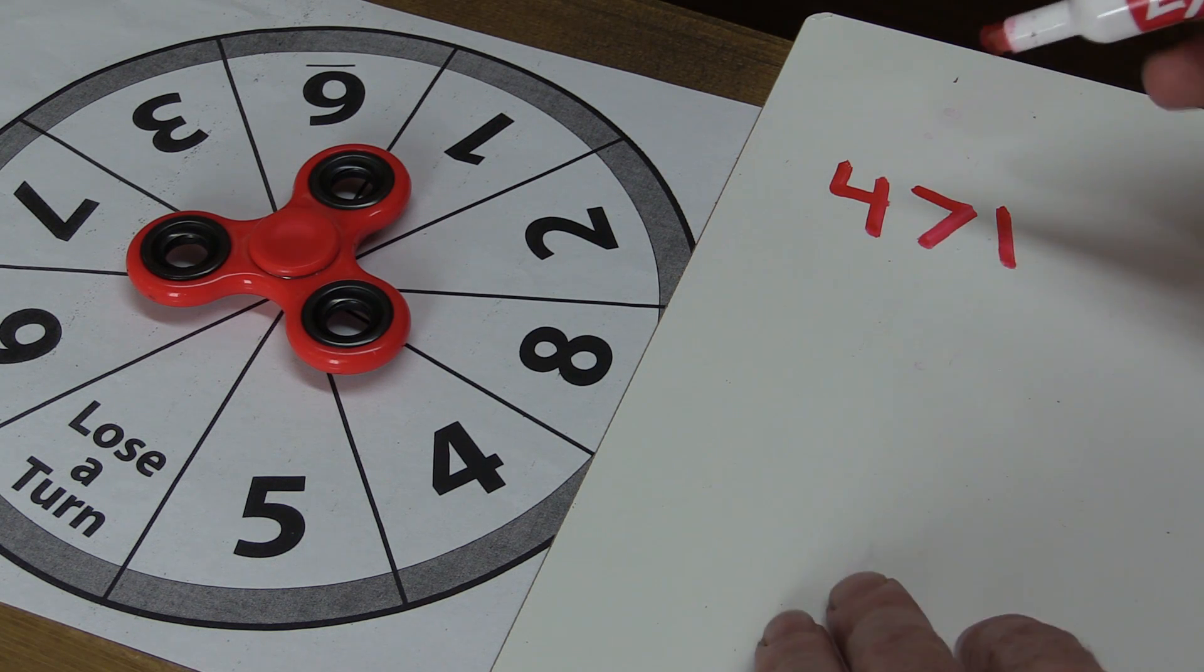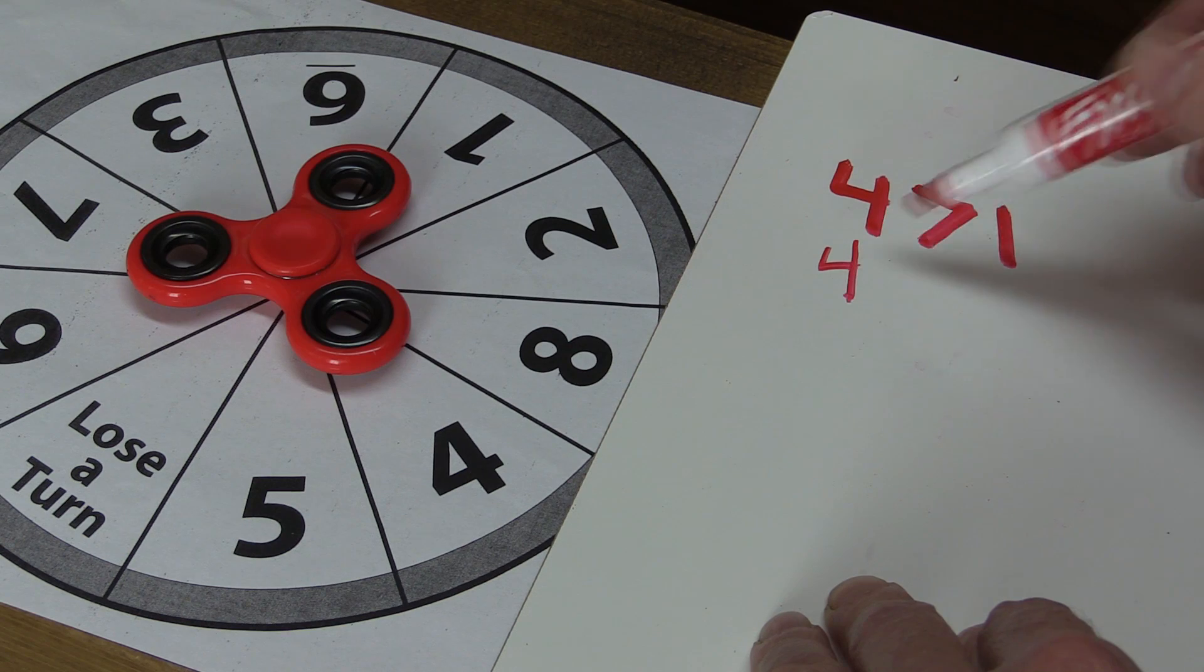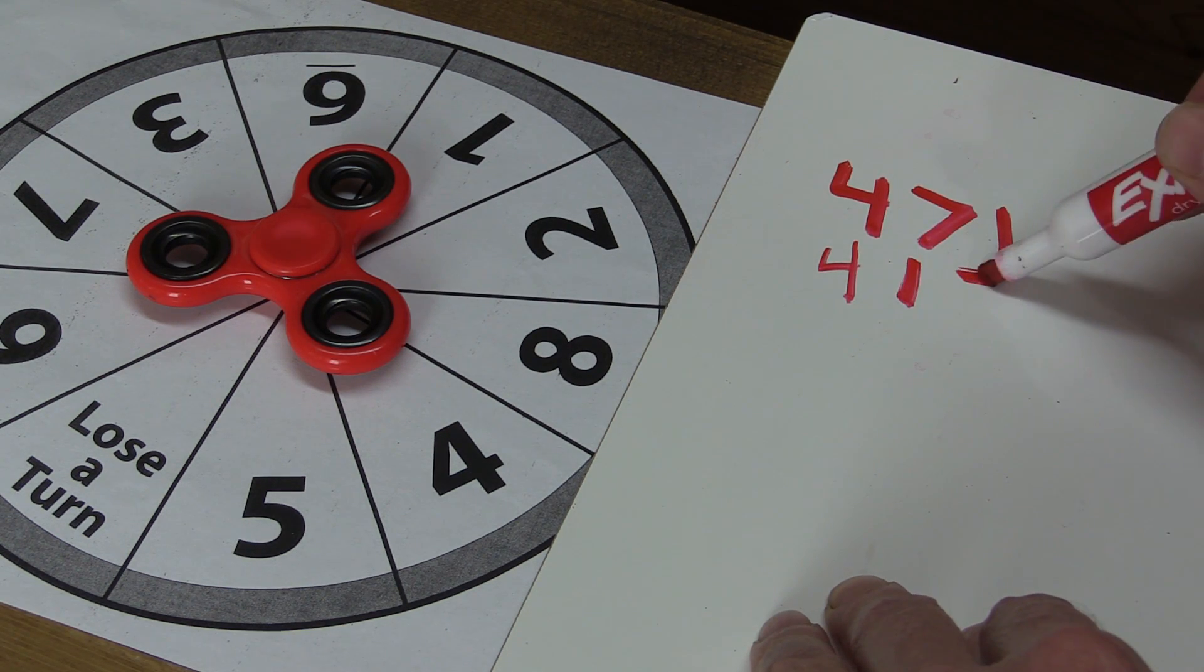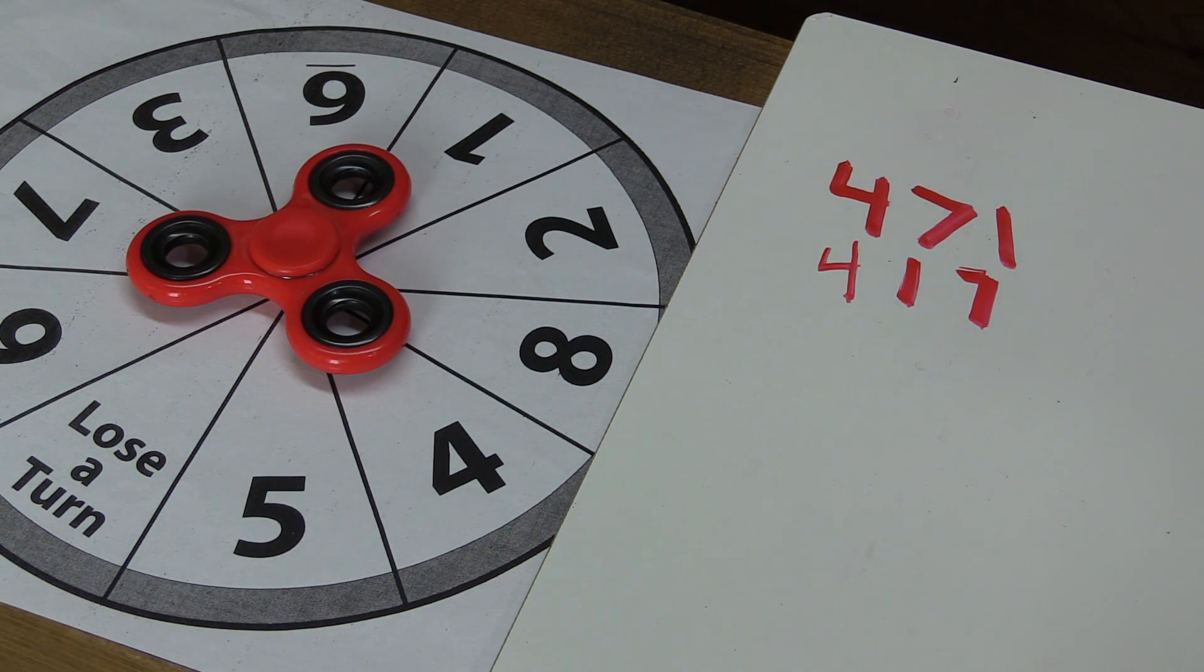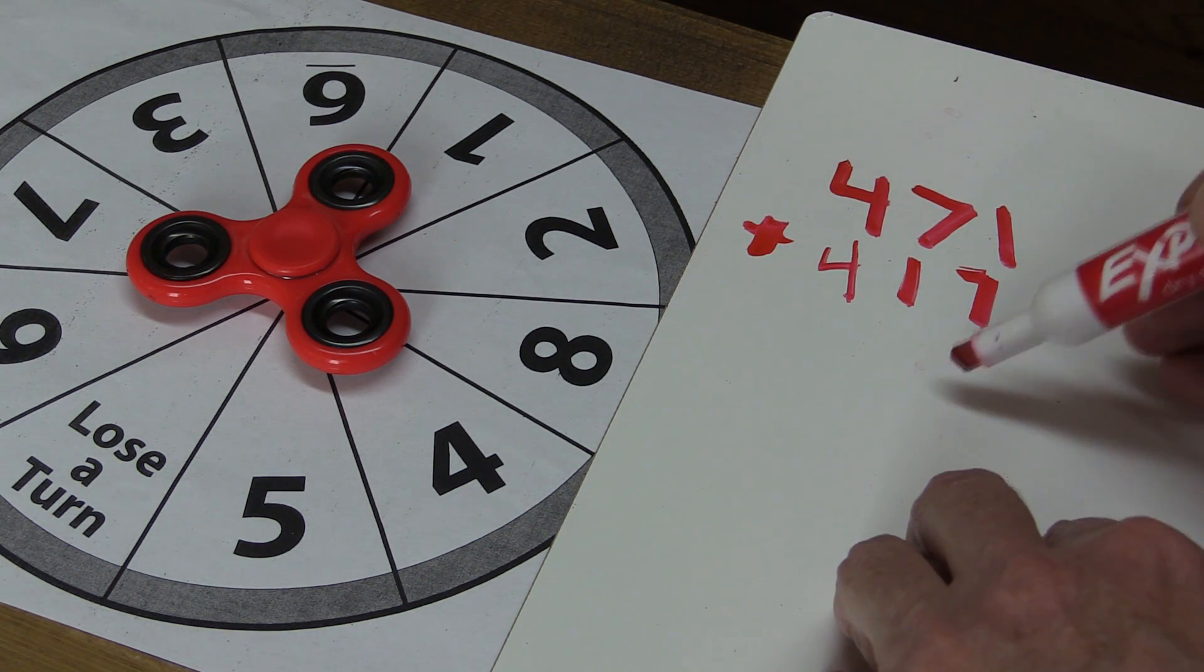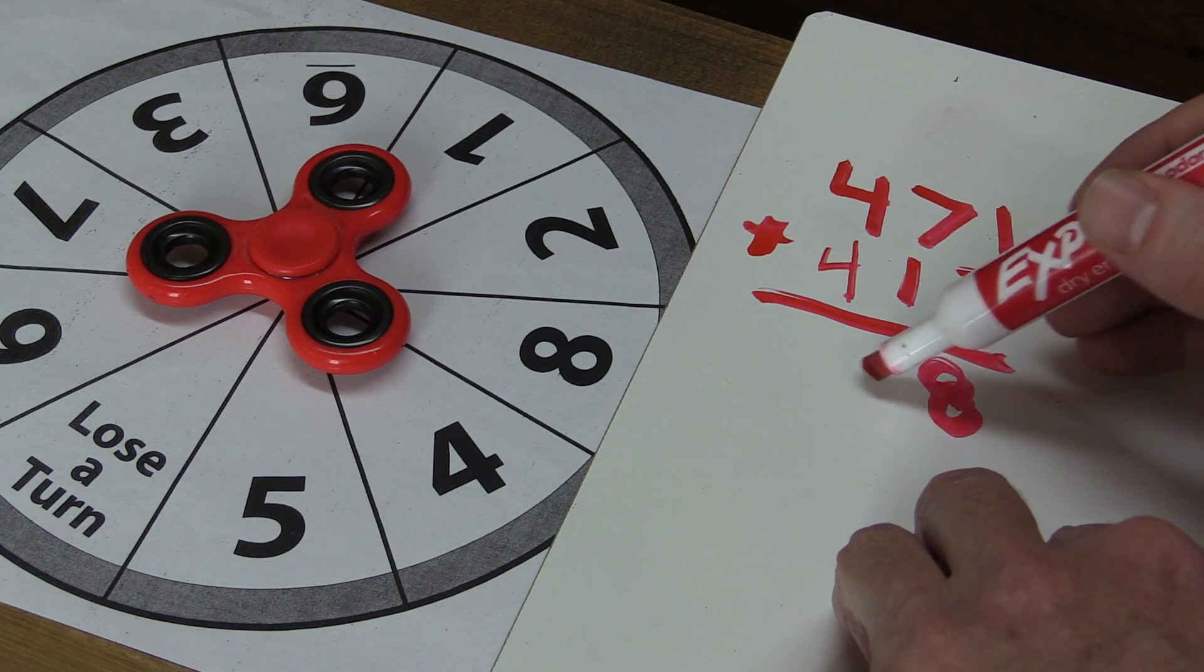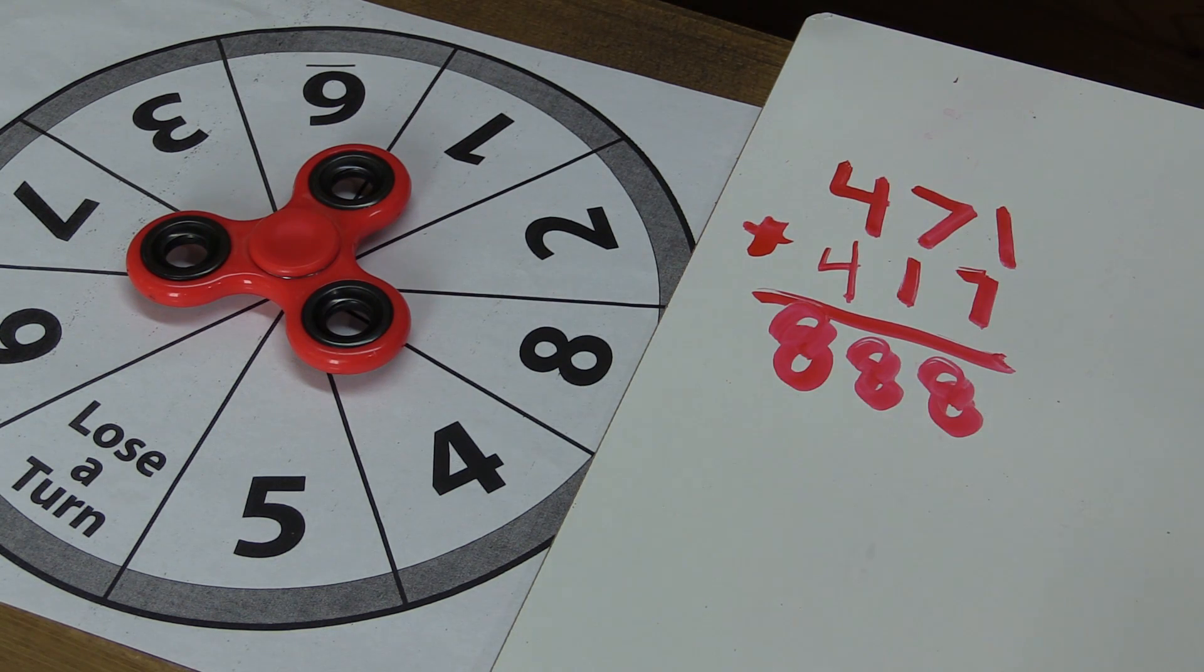They get to write the numbers again in any order they want to, so maybe they choose a four again, but now they put one and seven - so 417 - and they will add that. Sometimes there'll be regrouping, sometimes there won't be. How cool is that? They're doing math, playing with their spinner, having a fun time.